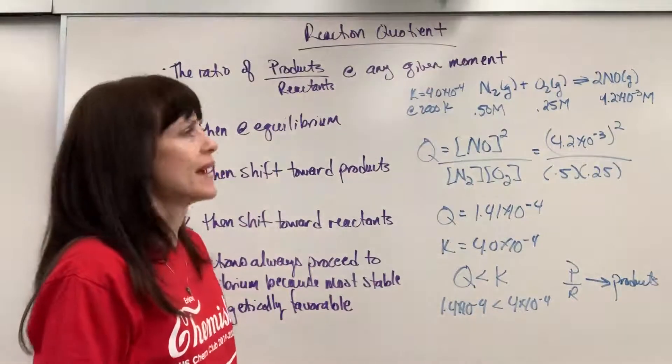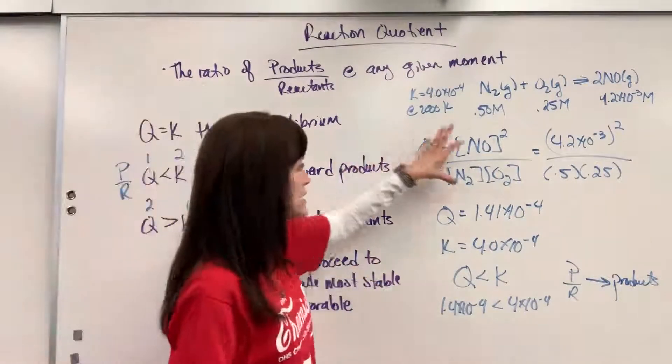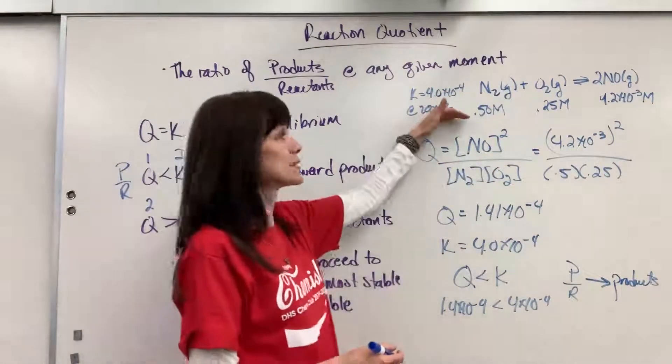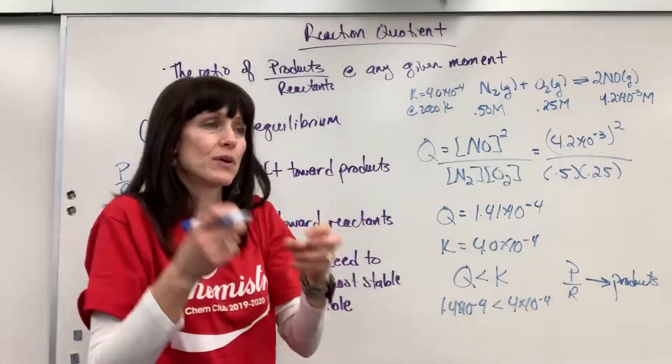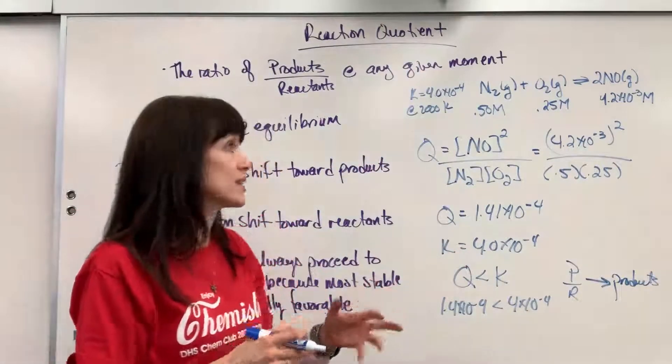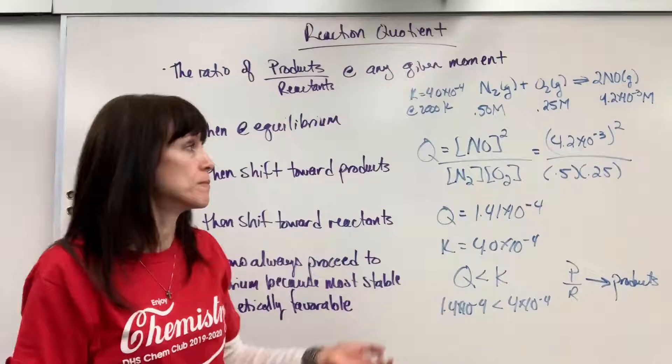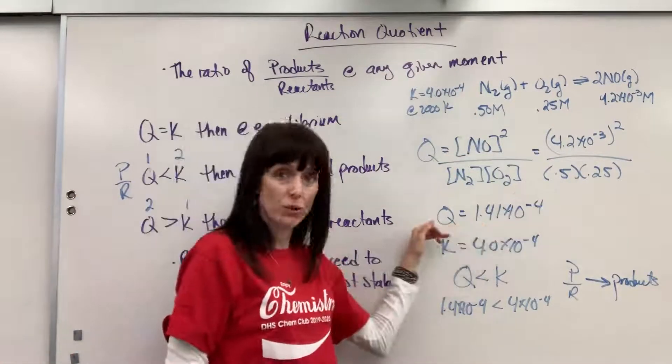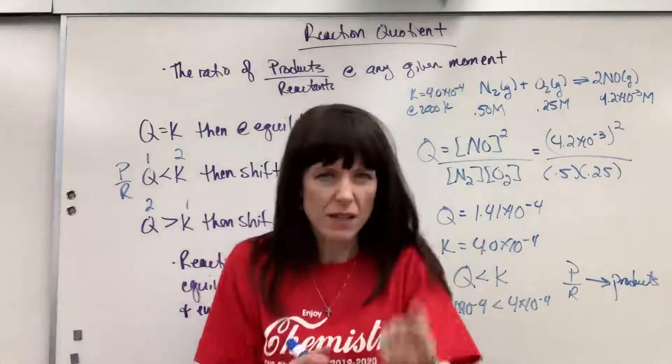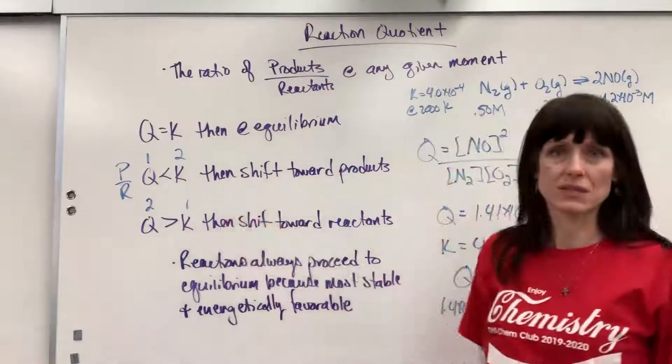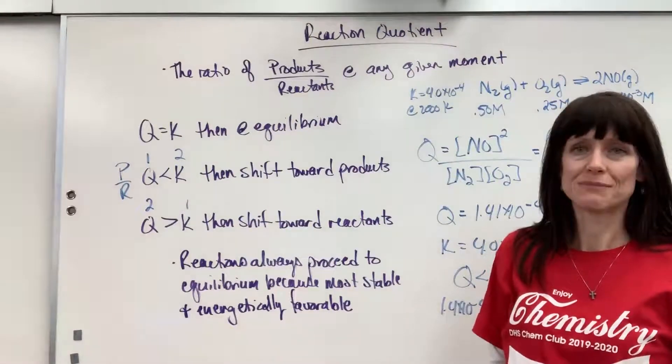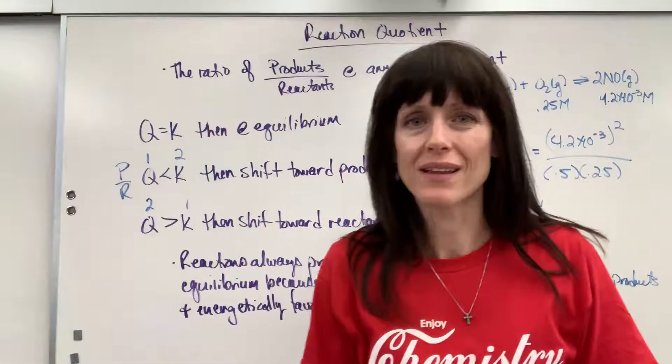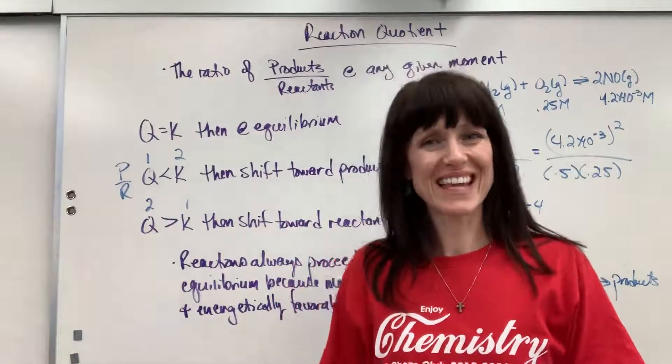So there you have reaction quotient. You're going to have to write down the equilibrium expression, plug in what you have. And remember, this is always a snapshot. You don't know where you're at. If you have more reactants, more products, than you should if you're at perfect equilibrium. This is a snapshot. You plug it in. And then you compare what you get, that reaction quotient Q to K. Then think your way through it. And it's going to be one of these three scenarios. Nice work. If you need more help with equilibrium, check out the playlist under equilibrium. Think. Have a good day. Thanks.